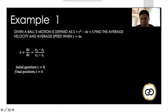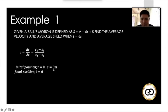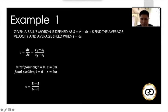The initial position is at time equal to zero, and the final position is at time equal to 6 seconds. Substituting t = 0: s = 0² - 6(0) + 5 = 5 m. Substituting t = 6: s = 6² - 6(6) + 5 = 5 m. The initial and final positions are the same, so the change in displacement is zero. Therefore average velocity = (5 - 5) / (6 - 0) = 0 m/s.